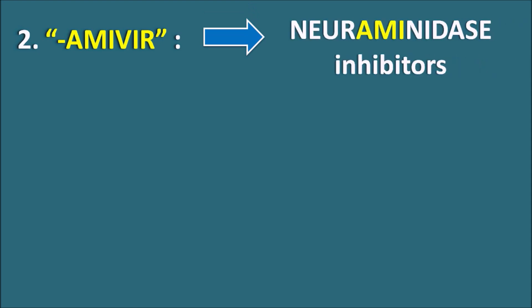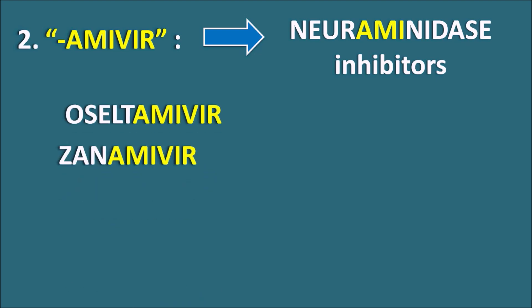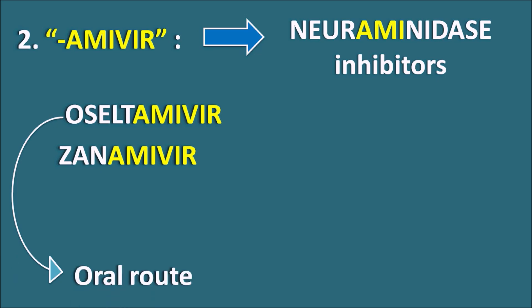Second one is the suffix -emivir. This indicates they are neuraminidase inhibitors. The first three letters 'ami' indicate they are targeting neuraminidase, and since they are antivirals we add the suffix '-vir', giving us '-emivir'. We have two drugs in this category: oseltamivir and zanamivir. These two drugs can be used in the treatment of influenza A as well as influenza B infections.